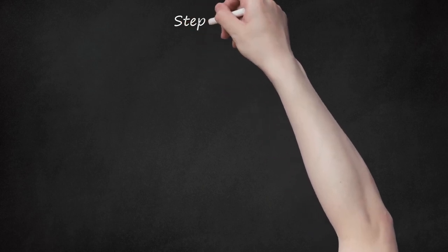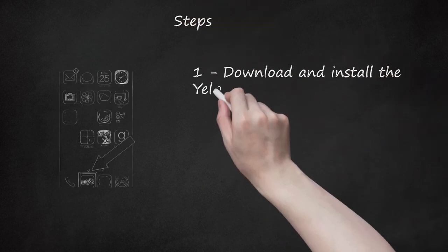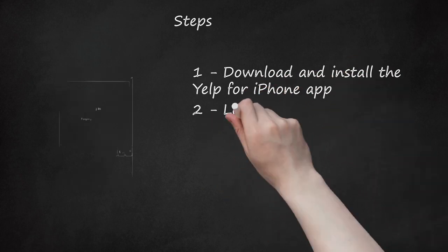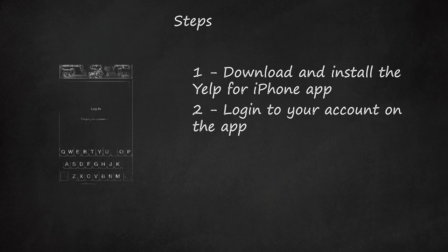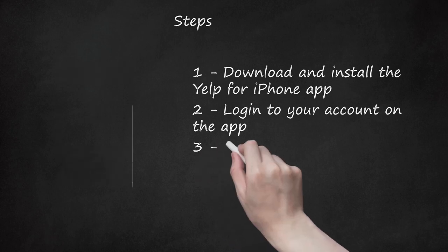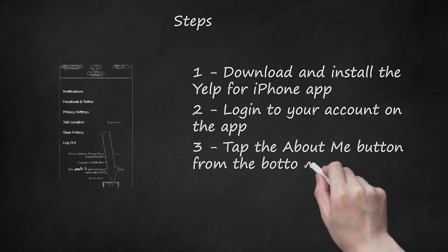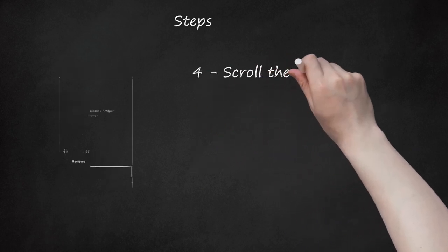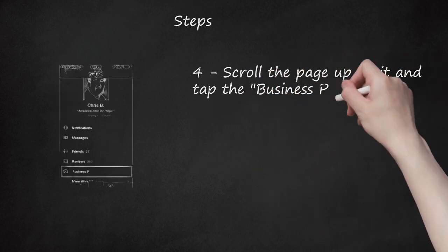Steps. 1. Download and install the Yelp for iPhone app. 2. Log into your account on the app. 3. Tap the About Me button from the bottom of the screen. 4. Scroll the page up a bit and tap the Business Photos option.